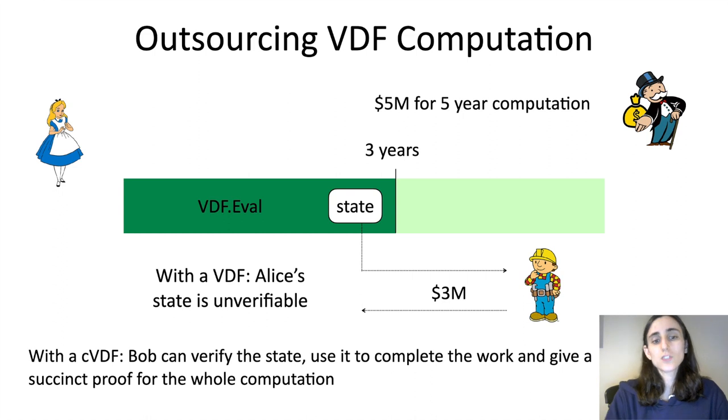In contrast, if she had used a continuous VDF, Bob would be able to verify her state, complete the work, and give a succinct proof for the whole computation. I want to emphasize here that when I say succinct proof for the whole computation, I don't mean that Bob will continue from where she left off and then append a proof of the rest to her proof. Here, a continuous VDF really allows this sort of handing off of computation in a way where the proof size isn't going to grow multiplicatively with the number of handoffs.